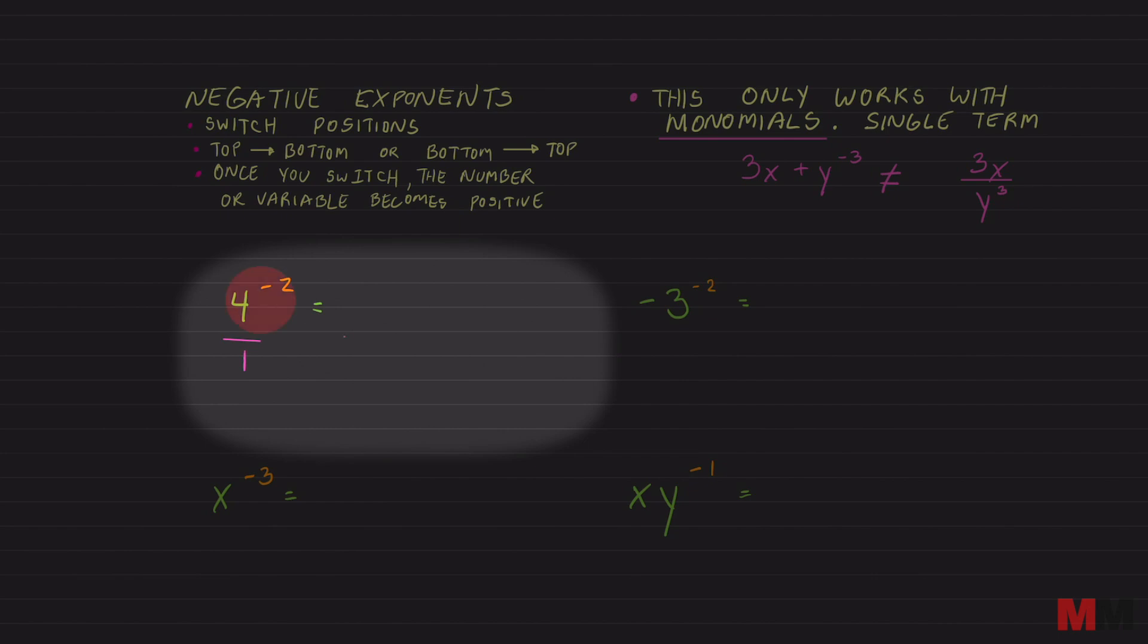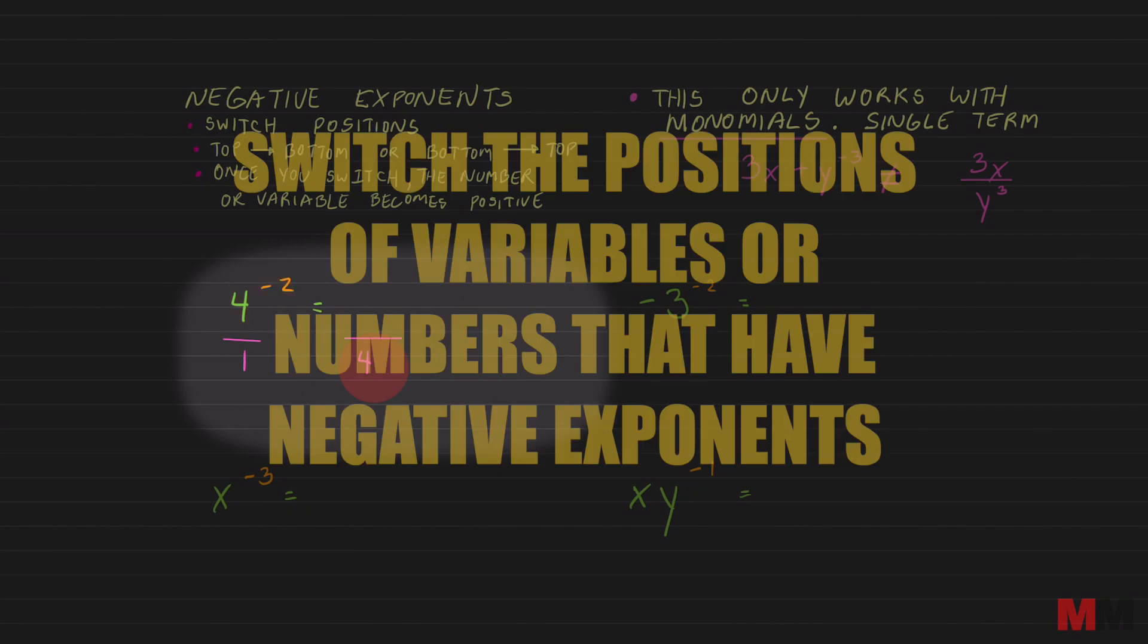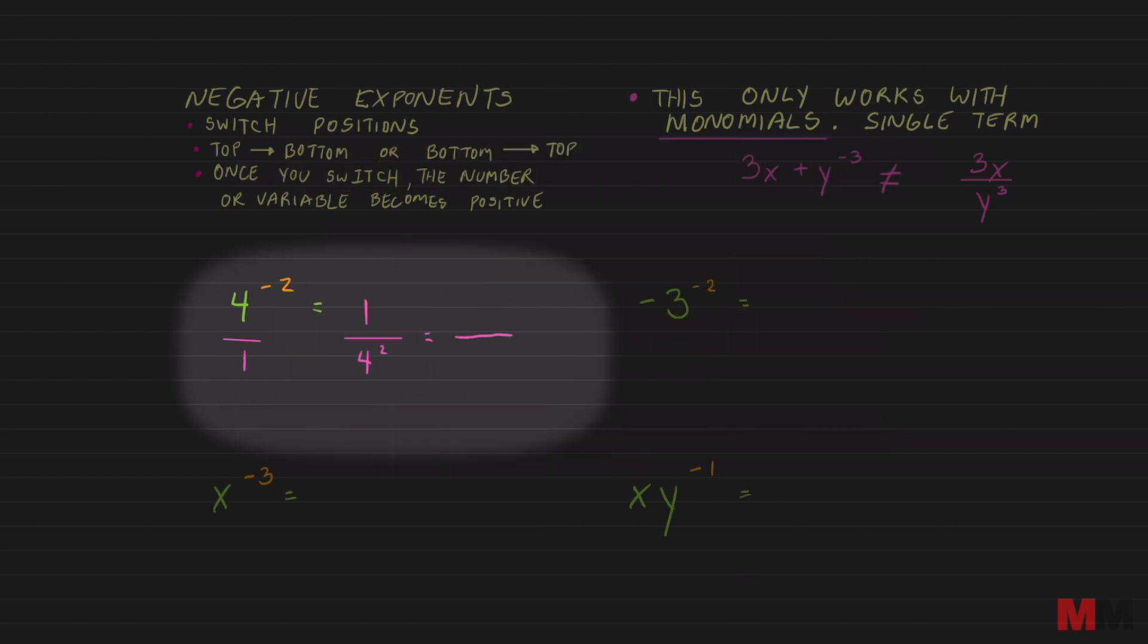And once you move it to the bottom, it will lose its negative exponent. So that negative 2 will turn into a 2. There's nothing on the top, there's really a 1 on the numerator. And then simplify further, you know that 4 squared is 16 and that's just a 1 on the top. So that's it.